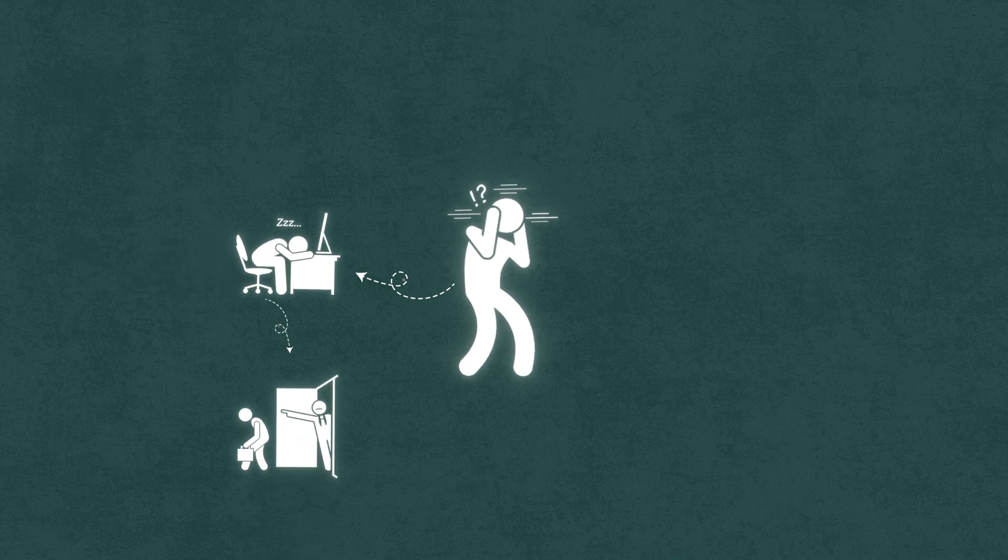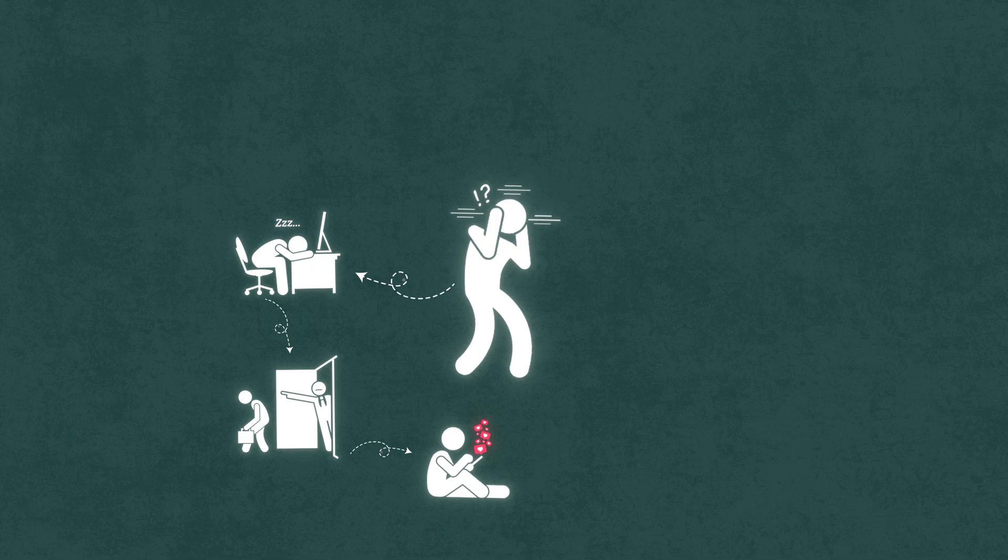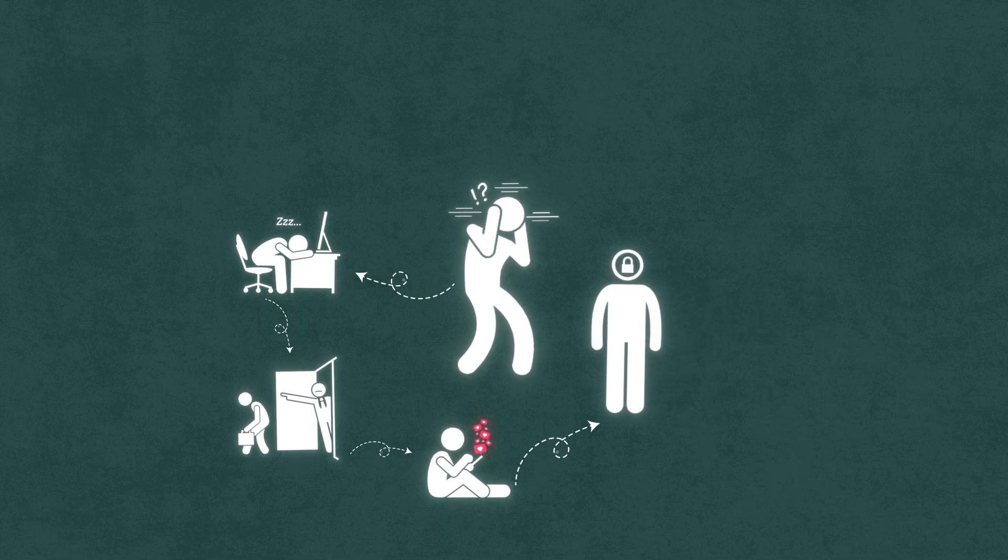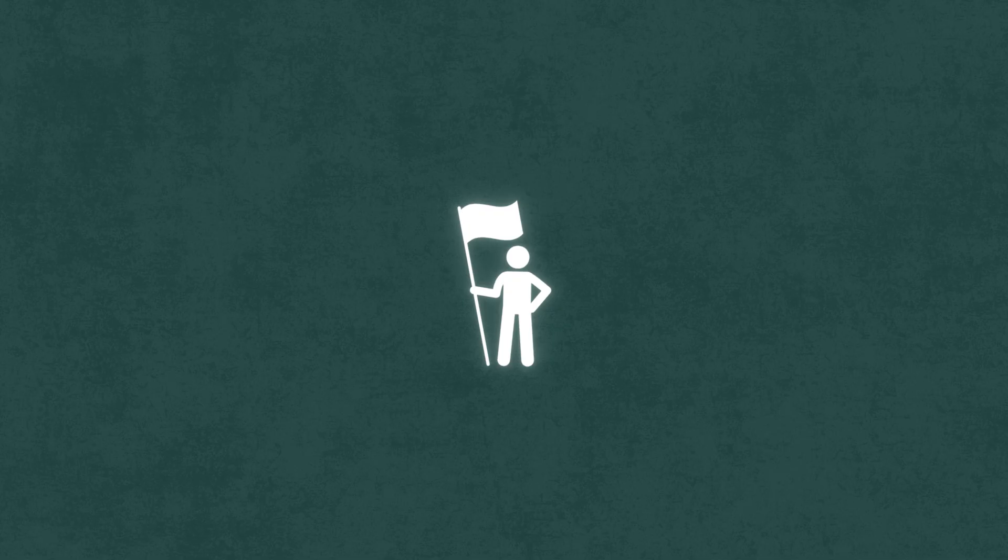That's why they bounce between 10 different projects, scroll TikTok every two minutes, and never actually lock in on anything. But when you become obsessed with a goal, the salience network flips a switch. Suddenly, everything you see, hear, and think about runs through one filter. Does this get me closer to my goal or not?